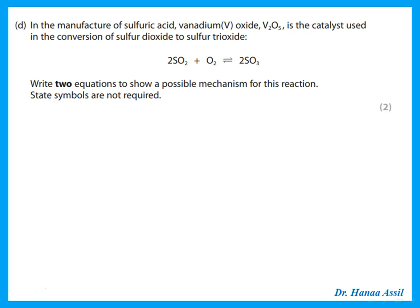In the manufacture of sulfuric acid, vanadium(V) oxide (V₂O₅) is the catalyst for converting SO₂ to SO₃. Two equations show the mechanism: first, V₂O₅ reacts with SO₂ to give SO₃ and a reduced vanadium species; second, the reduced species is re-oxidized by oxygen to regenerate V₂O₅. Overall, V₂O₅ is unchanged — confirming it acts as a catalyst.